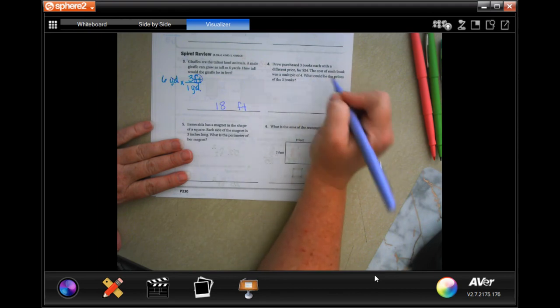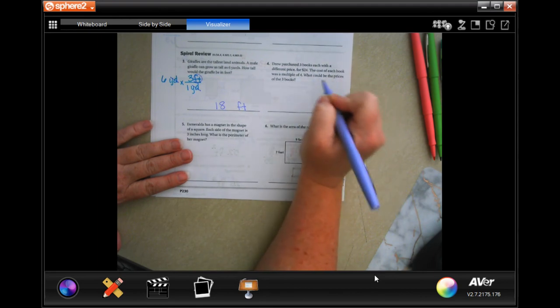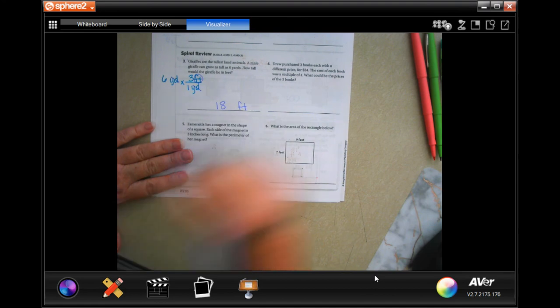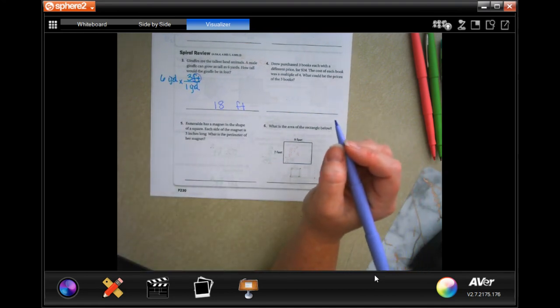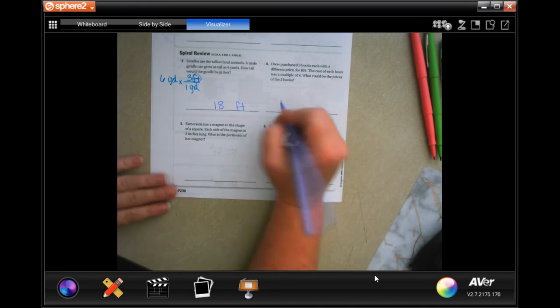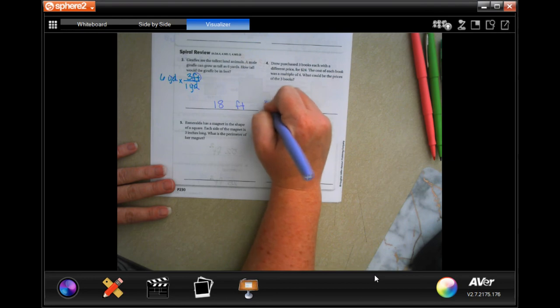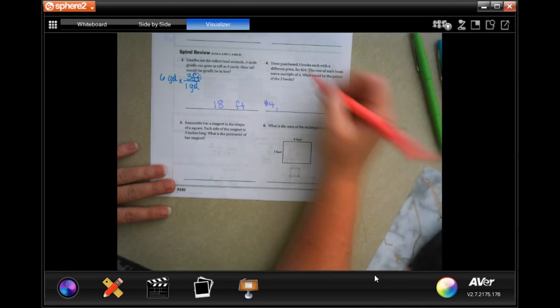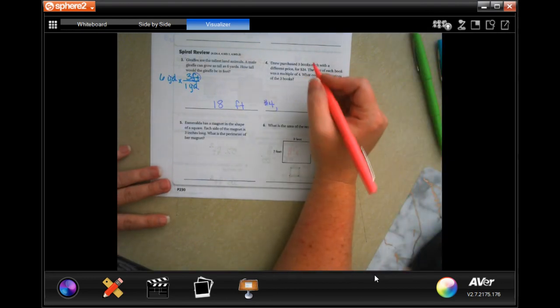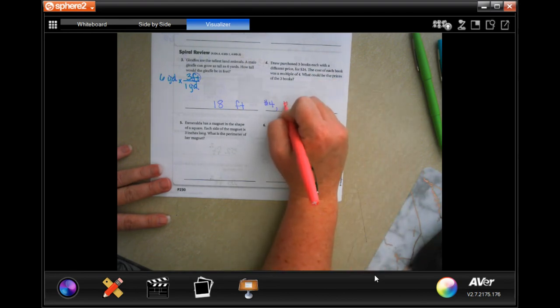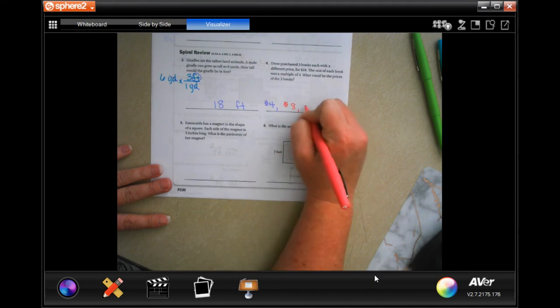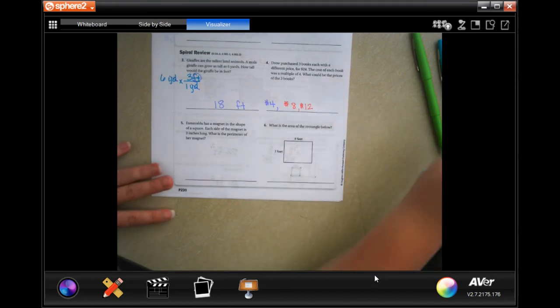You purchased 3 books, each with a different price, for $24. The cost of each book is a multiple of 4. What could the prices be? Let's see, we could say maybe one of the books is $4, that leaves us $20. Well, 20... finding two that have multiples of 4, well 8 is a multiple of 4 and so is 12. So there you go.